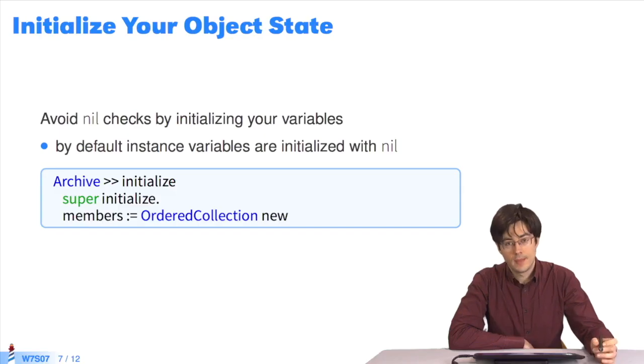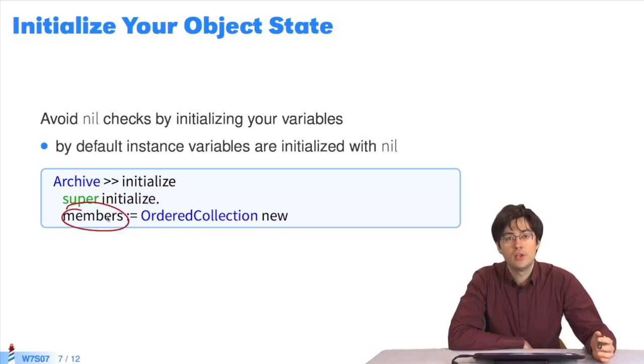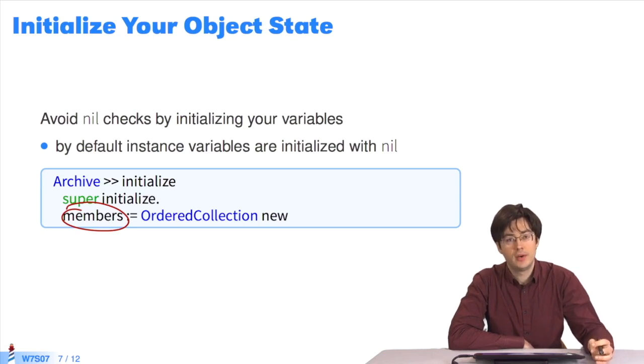Another case where we find checks for nil is in instance variables that are not initialized. If code says that if the variable is still nil it must react a certain way, it's better to initialize the variable straight away with a value that works for all cases. So here, for members, which contains a collection, we initialize an empty collection instead of using nil.